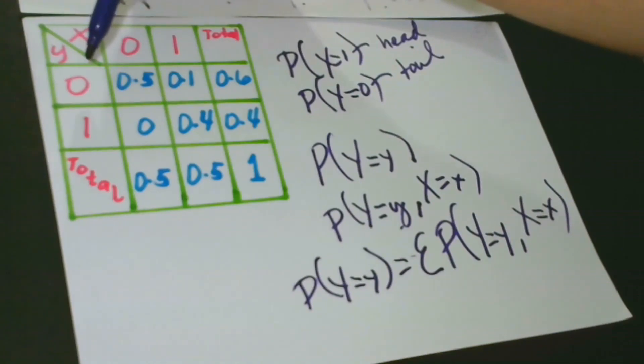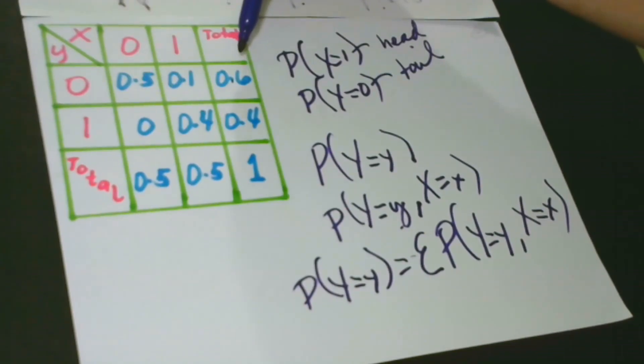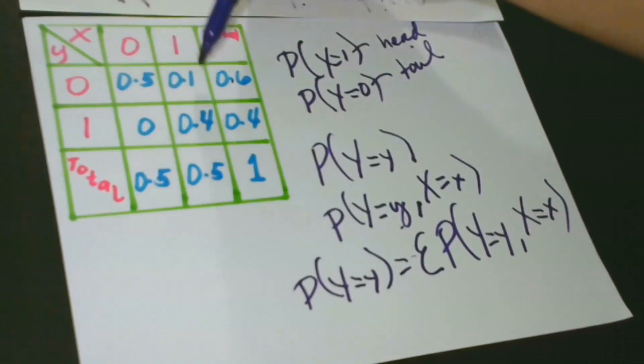And why is that 0.6? This is the result of adding 0.5 if X is 0 and 0.1 if X is 1.